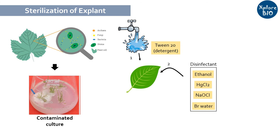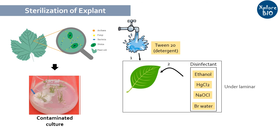Next, the explant is dipped in a disinfectant solution — such as 70% ethanol, HgCl₂, or sodium hypochlorite — for a few seconds up to several minutes, depending upon the concentration and the explant type. This step and all subsequent steps are performed in the laminar flow hood.